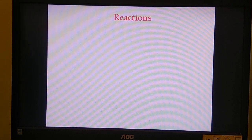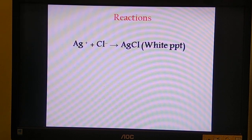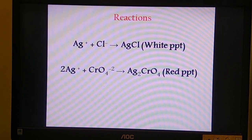Coming to the procedure—before the procedure, let us have an idea about the reactions. The silver ions Ag+ react with chloride ions to form AgCl, a white curdy precipitate. The silver ions react with chromate ions to form Ag2CrO4, that is silver chromate, pinkish red or red colored precipitate.